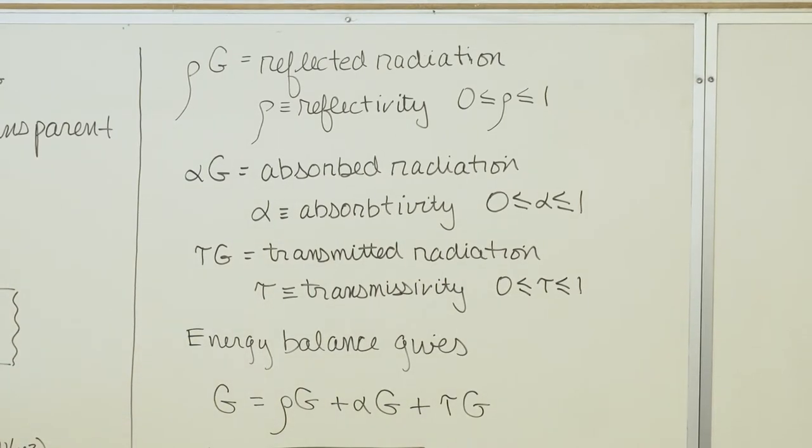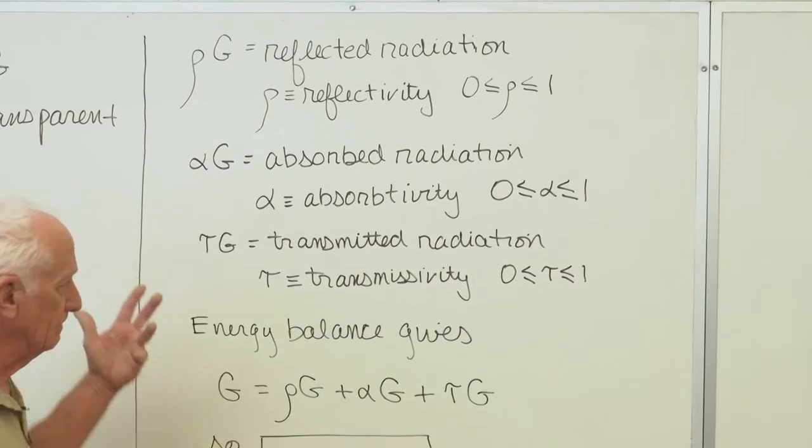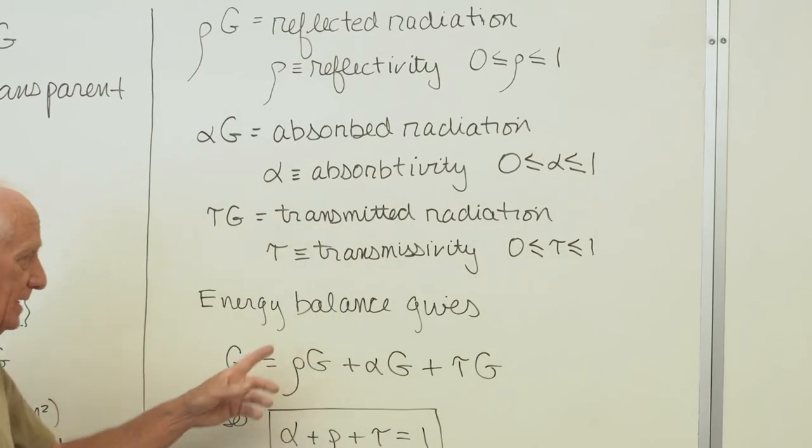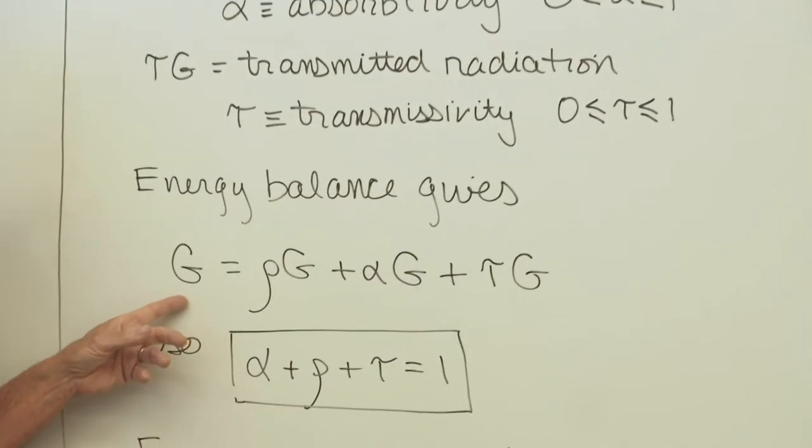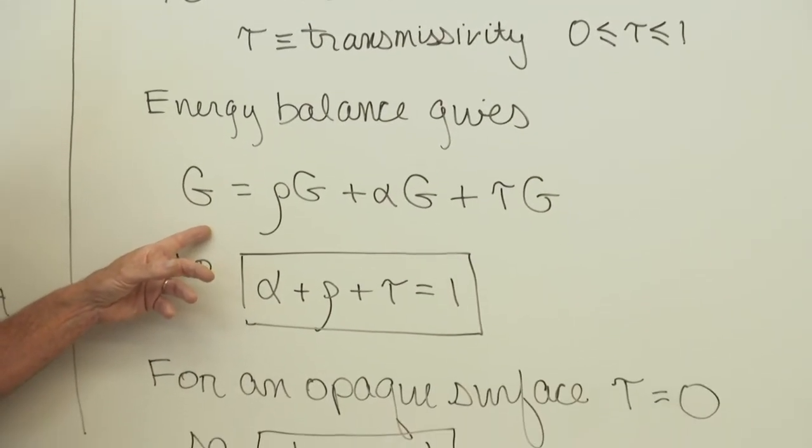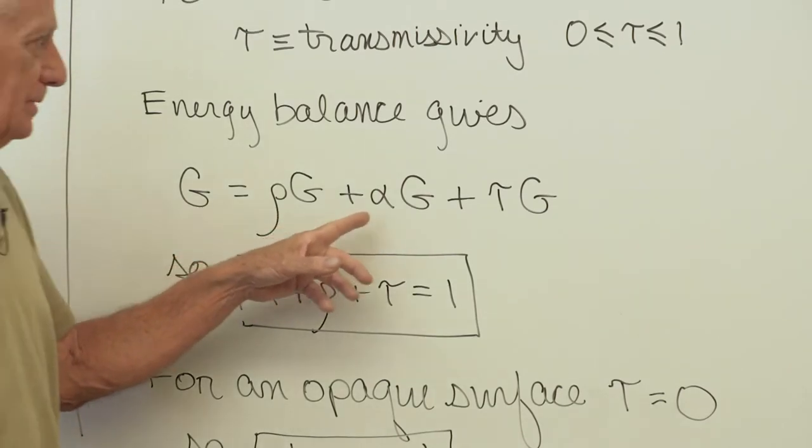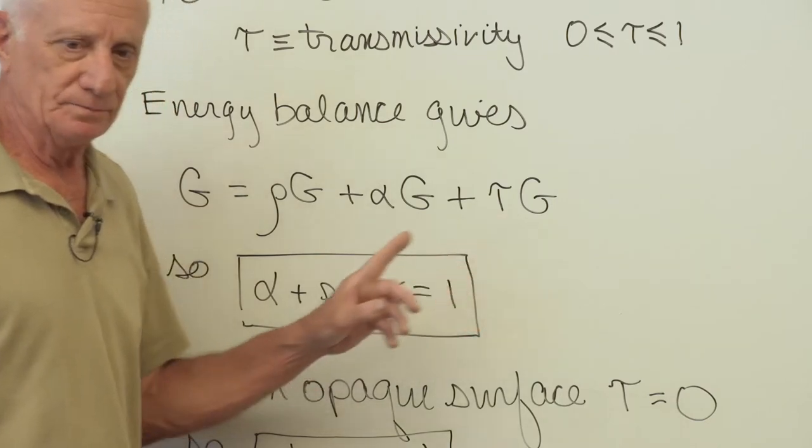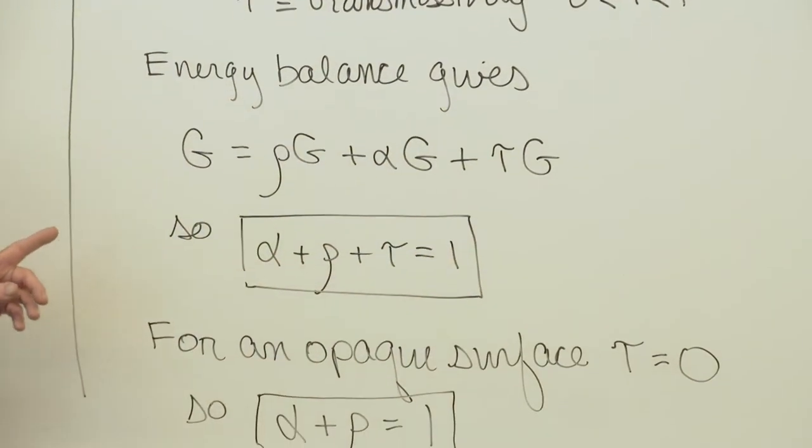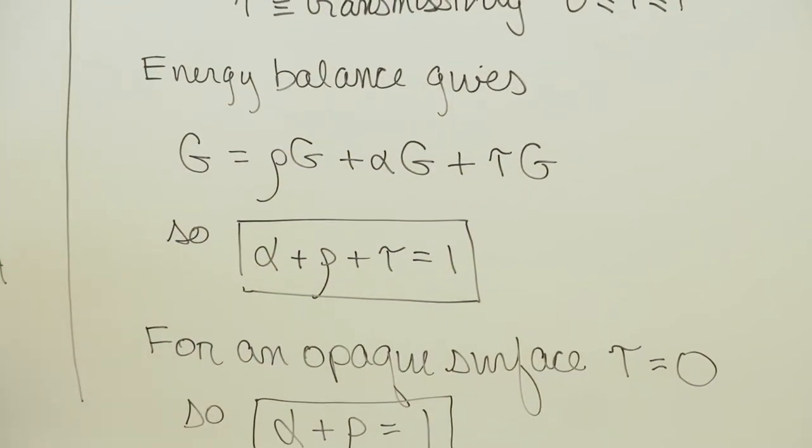We write an energy balance on that surface. What comes in for steady state goes out, no generation. So incoming radiation G equals the reflected plus the absorbed plus the transmitted. Each term contains G, so dividing through by G, we end up with alpha plus rho plus tau equal 1, a relationship between three surface properties.